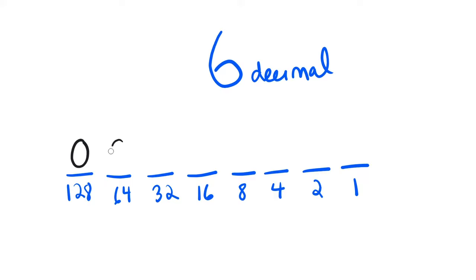64 is also greater than 6, 32 also greater than 6, 16 is also greater, 8 is also greater, so we've got a whole lot of zeros so far. 4 is not greater than 6, so we're finally going to put a 1.